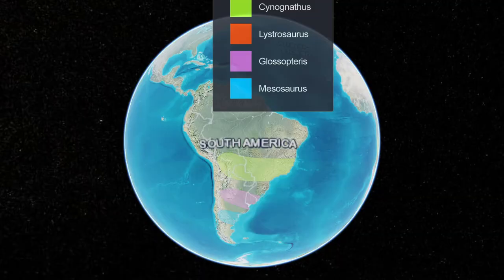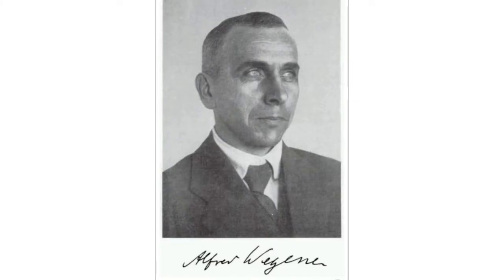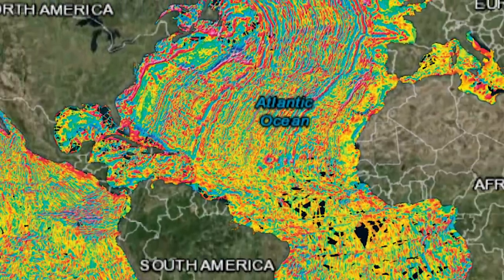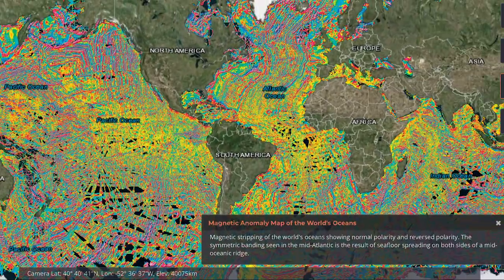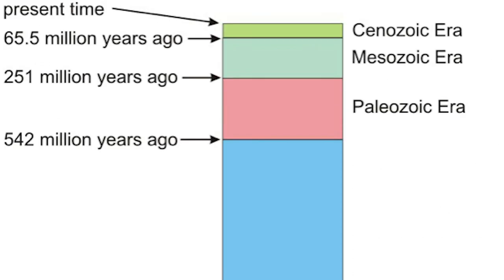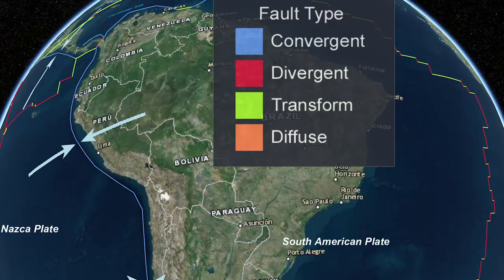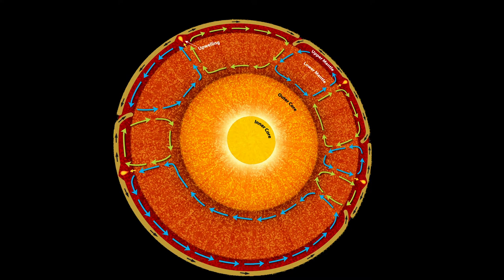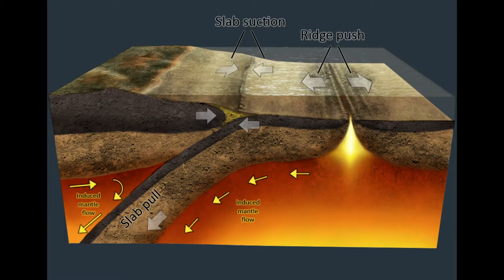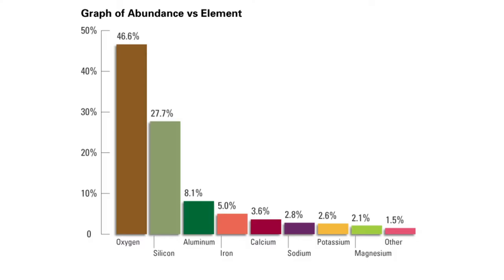Unravel the mystery of continental drift using the evidence gathered by Alfred Wegener. Reference paleomagnetism data as a record of seafloor spreading activity and record how the movement of the continents relates with the geologic timescale. Identify examples of Earth's divergent, convergent, and transform boundaries and determine the driving forces involved in the theory of plate tectonics.